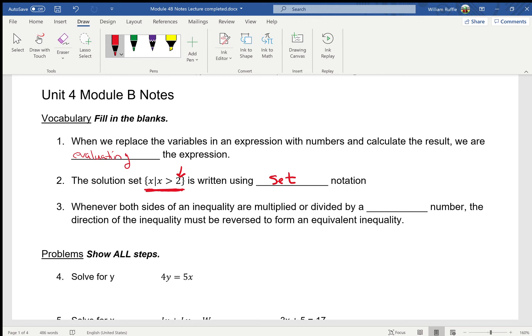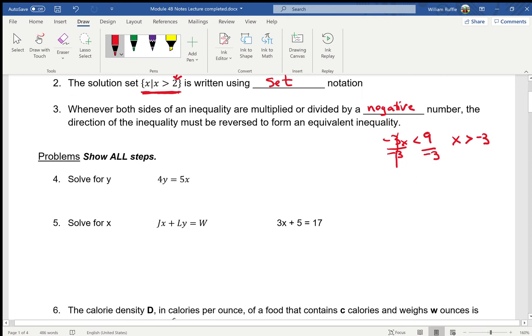Whenever both sides of an inequality are multiplied by a negative number, the direction of the inequality must be reversed. So if I have something like negative 3x is less than 9, and I divide each side by negative 3, the new inequality is now x, because negative 3 over negative 3 is positive 1. It's not less than anymore. It is now greater than negative 3. And we'll do more examples when we get to that section. That'll be in the second part of this lecture set here.